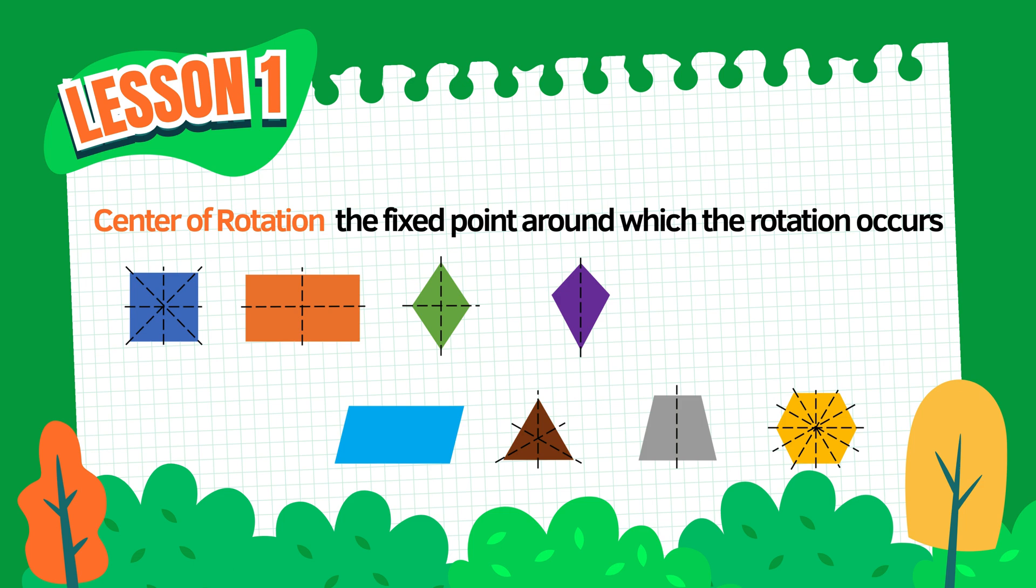Let's look at some examples. In a square, draw both diagonals from corner to opposite corner. Where they cross is the center of rotation—this is the exact middle of the square. In a rectangle, even though the sides are not all equal, the diagonals still cross in the center, and that's where the shape rotates.